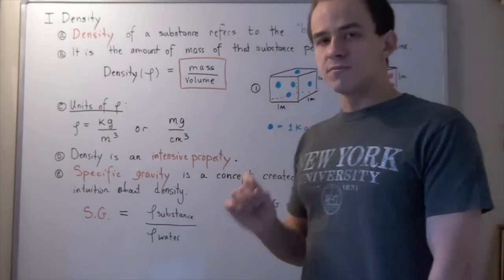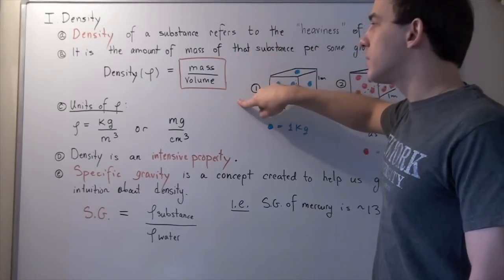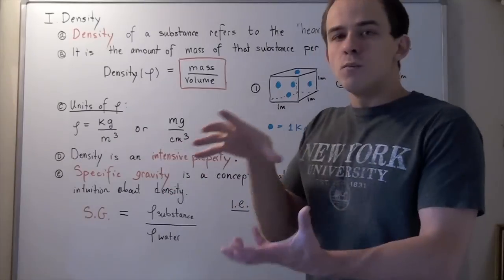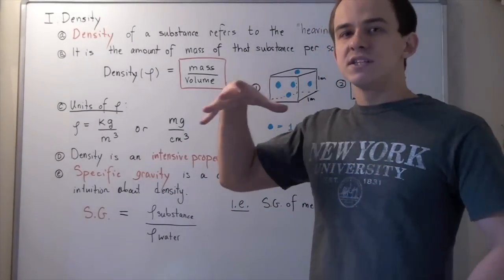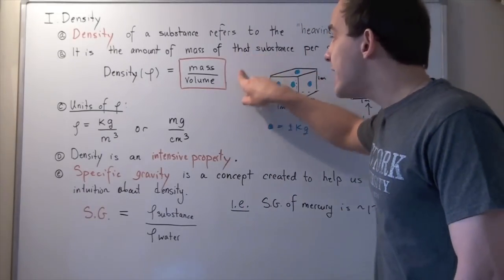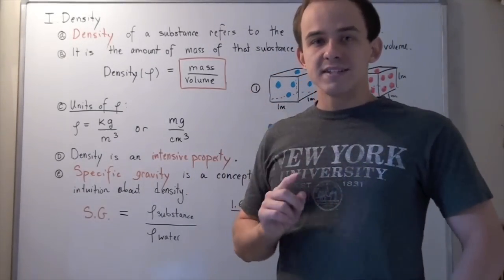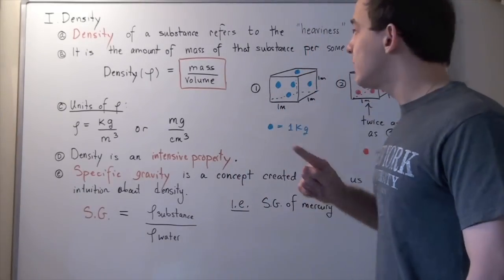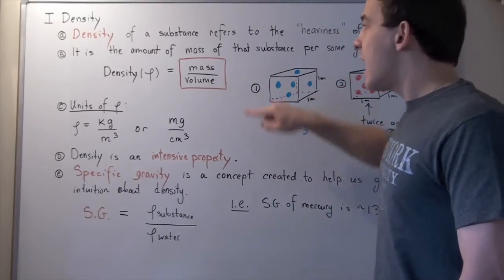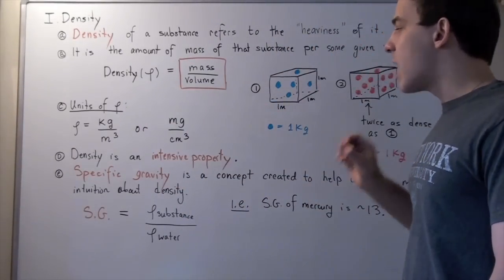The reason density is an intensive property is because it's a ratio of two extensive properties — mass divided by volume. Notice that if I go from one gram to a thousand kilograms of any given substance, the density stays the same because this ratio stays the same. By increasing the size of my substance, I not only increase the mass but also the volume, and this proportion stays the same. That's exactly why density is an intensive property.